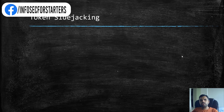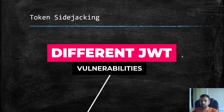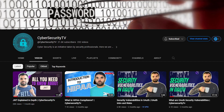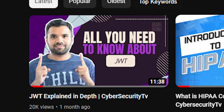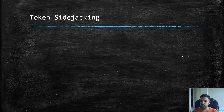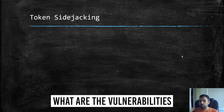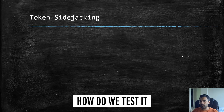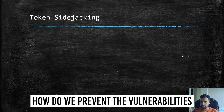In this episode we're going to start discussing the different JWT vulnerabilities. JWT tokens, as we saw in the previous episode, are used by various applications and are very common for APIs. We're going to discuss what the vulnerabilities are, how to test them, and how to make sure developers know how to prevent those vulnerabilities.